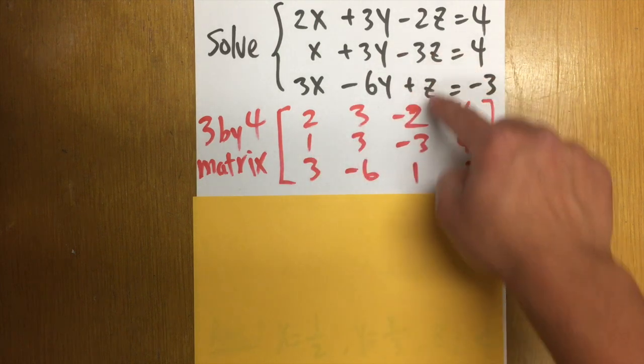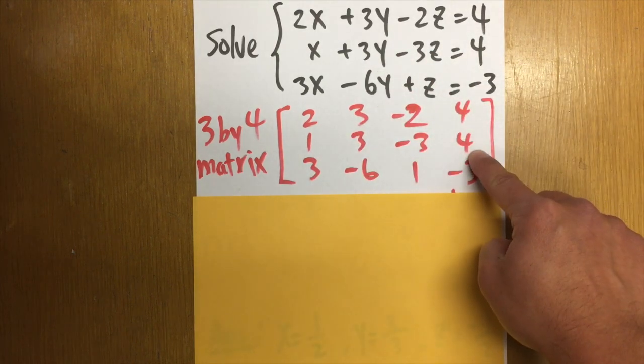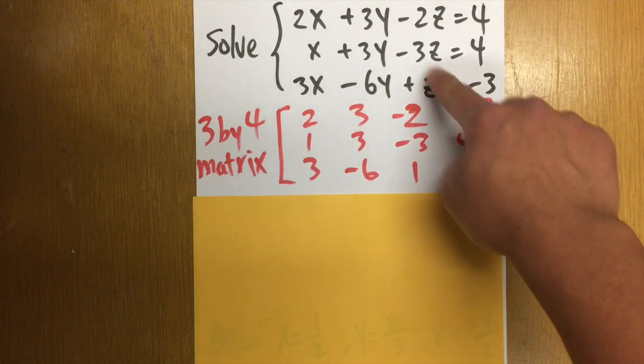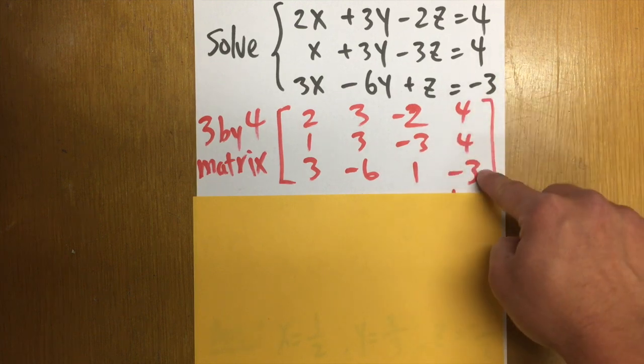And then we have 3, negative 3, and 4. And for the last row, we have 3, negative 6. And once again, the coefficient of z is 1. And then we have negative 3.